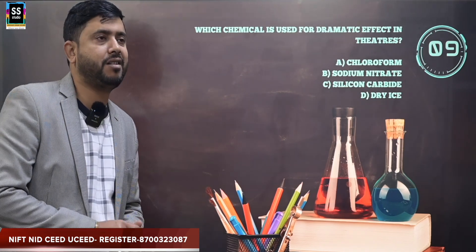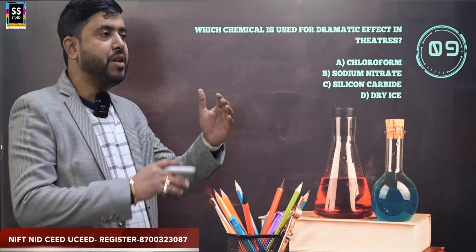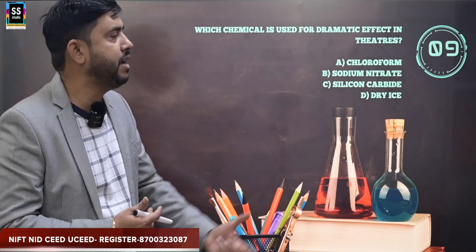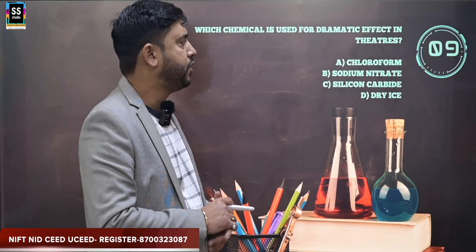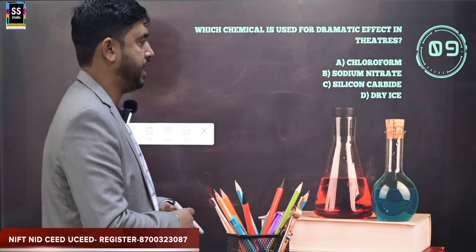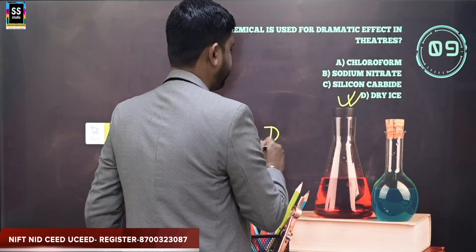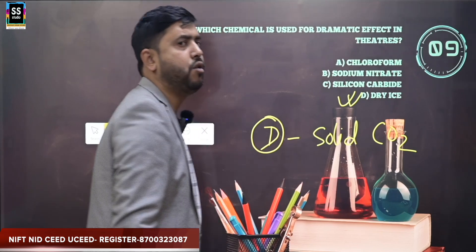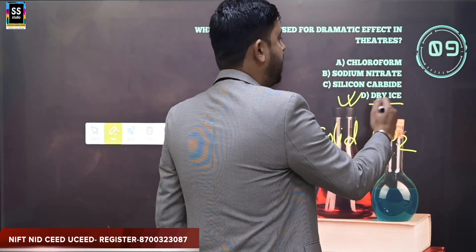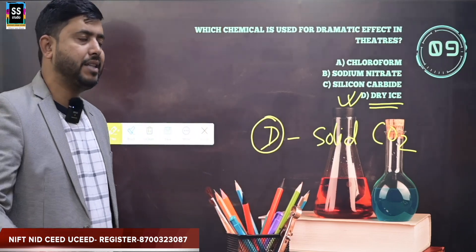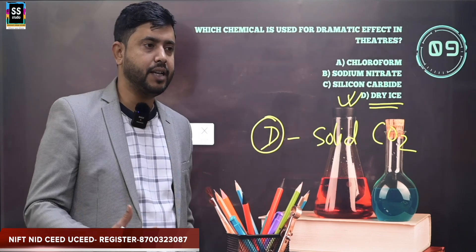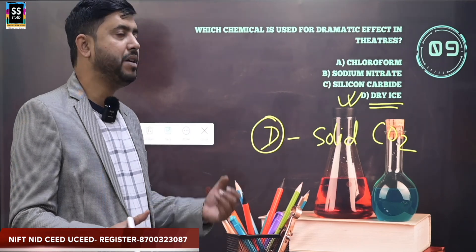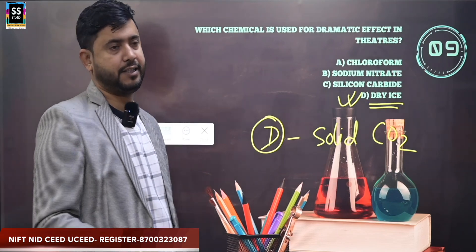Which chemical is used for dramatic effect in theaters? The options are chloroform, sodium nitrate, silicon carbide, or dry ice. The correct answer is dry ice, also known as solid carbon dioxide (solid CO2). Dry ice is used to create the fog or smoke effect that you see on stage in theaters.